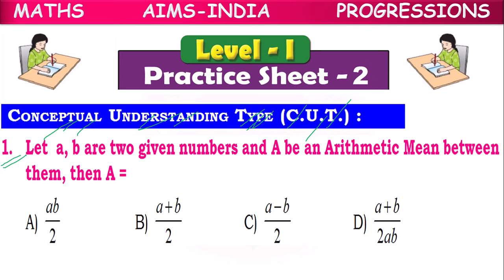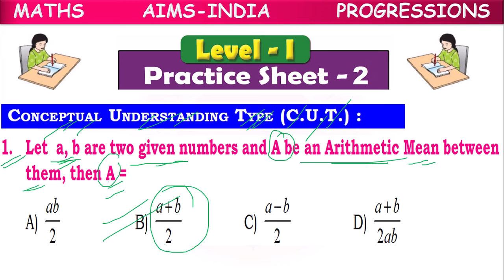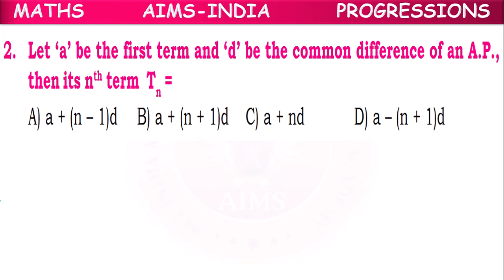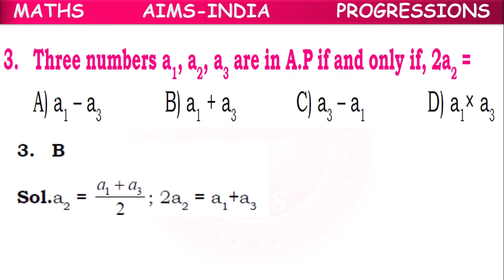First question: Let A and B be two given numbers and let capital A be the arithmetic mean between them. Then the arithmetic mean A = (A + B)/2, so option B is correct. Second question: Let 'a' be the first term and 'd' be the common difference of an AP. Then the nth term Tn = a + (n−1)d — option A is correct.